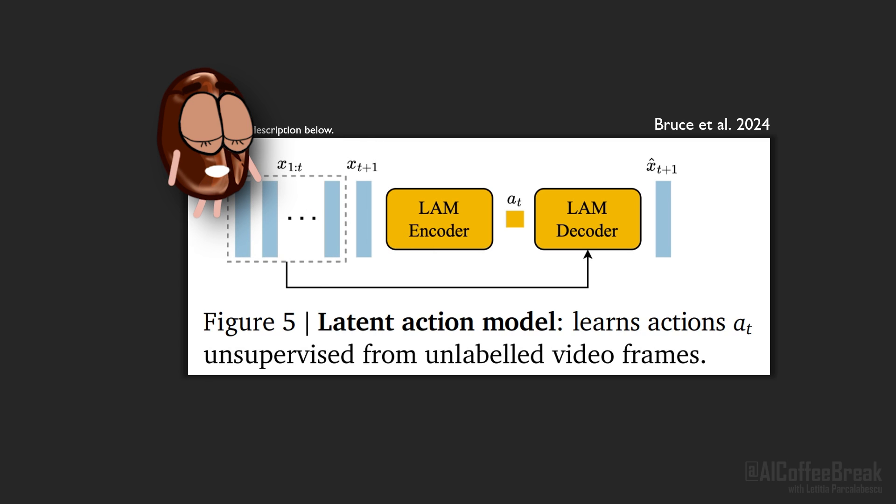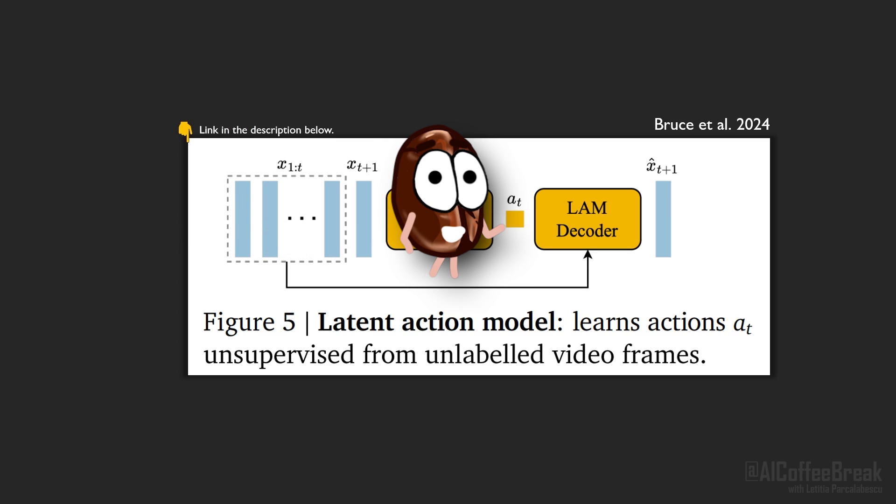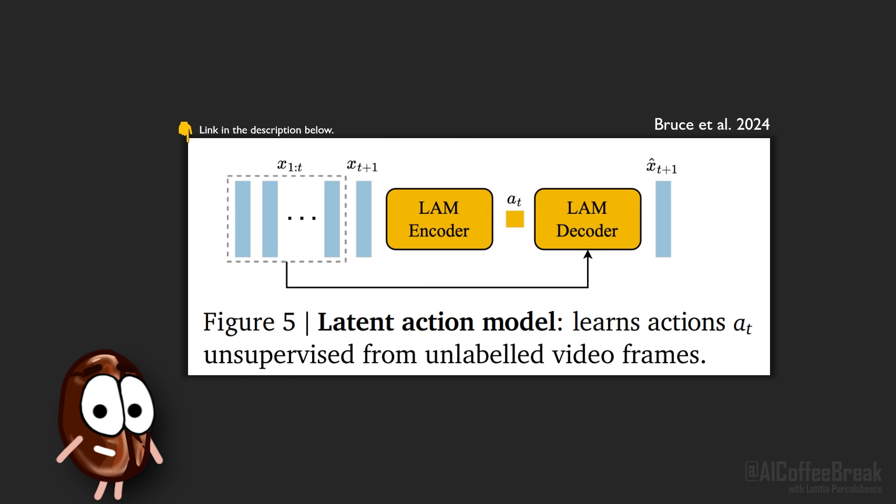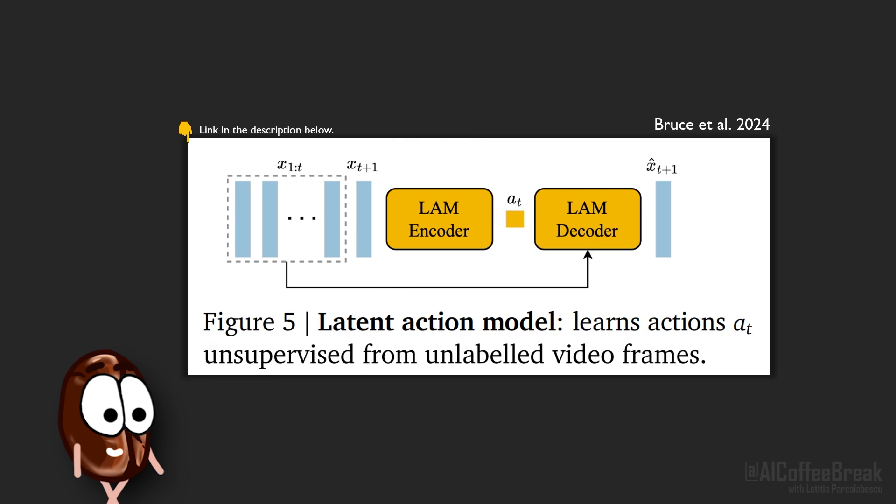Again, an ST-transformer acts as an encoder that takes as input all previous frames up to the current frame T, but also the next frame T+1. It outputs one latent action from a set of eight possible actions. These actions are not yet button presses because the whole idea is to discover them in an unsupervised way.